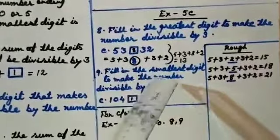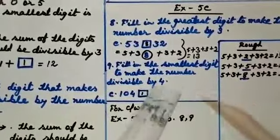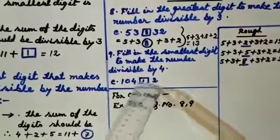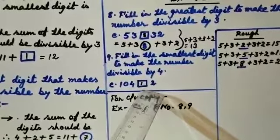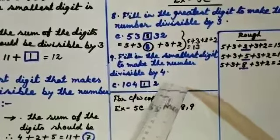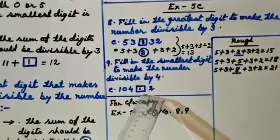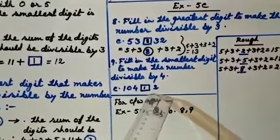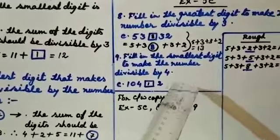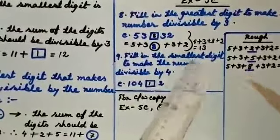Now see Question 9: fill in the smallest digit to make the number divisible by 4. The number is 104 with the last digit missing. For divisibility by 4, the last two digits must be divisible by 4. The last given digit is 4, so look at numbers starting with 4: 4 times 3 is 12, making the last two digits 12. The smallest digit is 1 — no need to go further. Write 1.